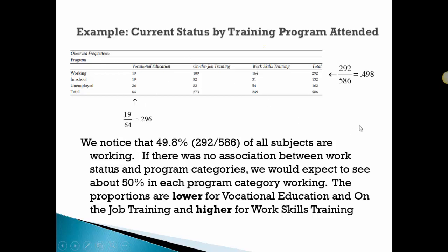But when we do those calculations, we see in the vocational ed it's down to 30%, on-the-job training about 40%, job skills much higher, almost 66%.